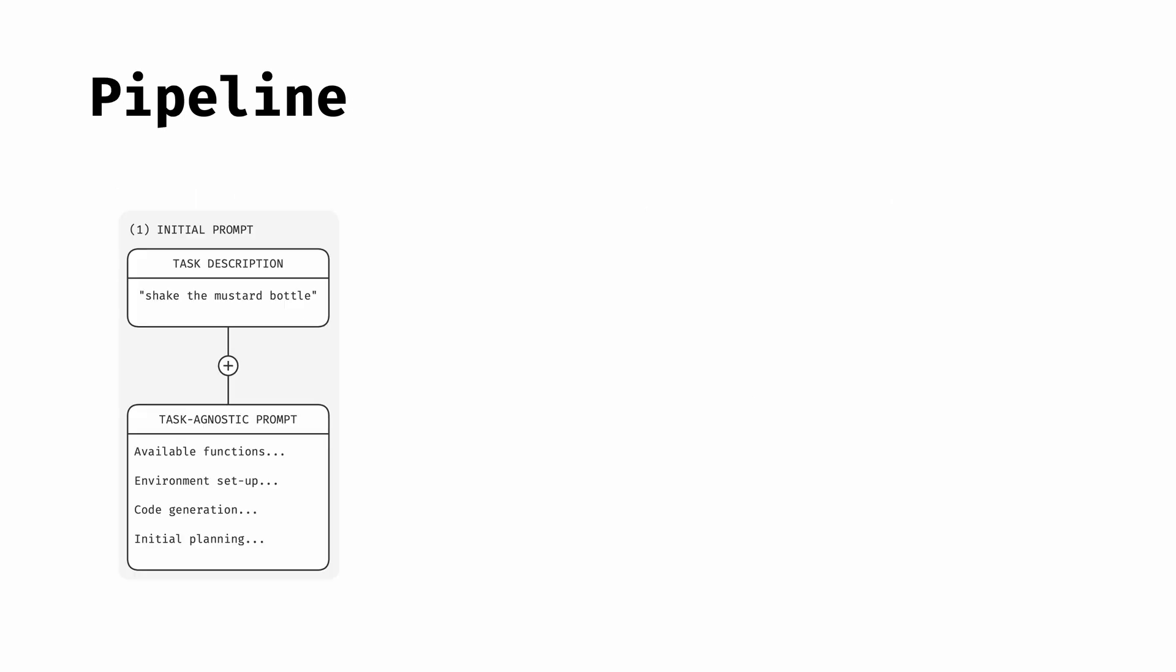The prompt itself is composed of the task description given by the user, as well as details fundamental to all tasks, including functions available for the LLM to call such as detect object, environment setup and coordinate definitions, and guidance on code generation, planning with step-by-step reasoning, and collision avoidance.